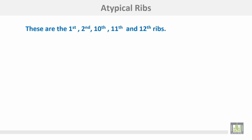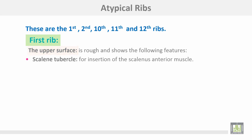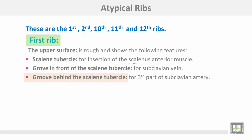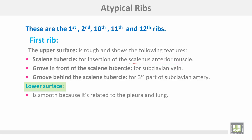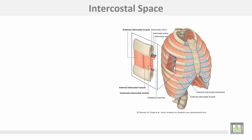Atypical ribs are the first, second, and last three ribs. The first rib: its upper surface is rough and shows a scalene tubercle for insertion of the scalenus anterior muscle. In front of the scalene tubercle is a groove for the subclavian vein, and behind it is a groove for the third part of the subclavian artery. The lower surface is smooth as it is related to the pleura and the lungs.